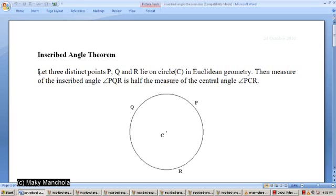It states that if you have three points, three distinct points on a circle whose center is C, then the inscribed angle PQR is half the measure of the central angle PCR.